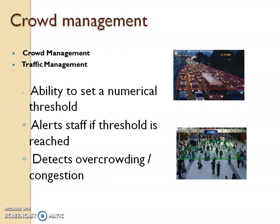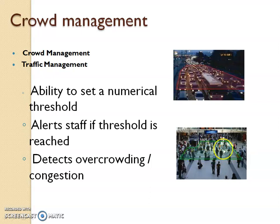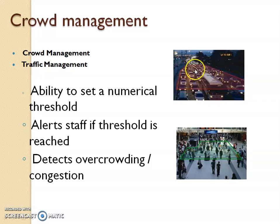Crowd management allows setting a threshold for the number of people or vehicles in a particular area. If something strange is happening — like a fight — you can see sudden crowding of people, which is detected as unusual. If the number of people exceeds the permissible limit, the CCTV will react. The same applies in traffic: if an accident has happened, you can see crowding of vehicles.